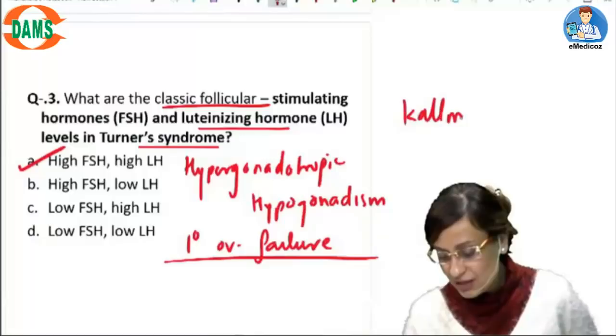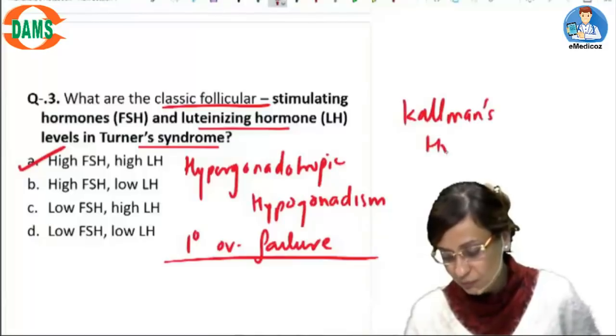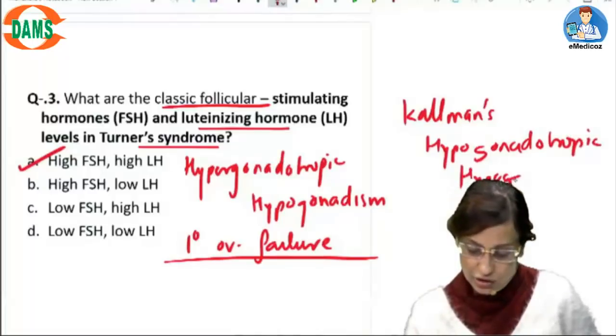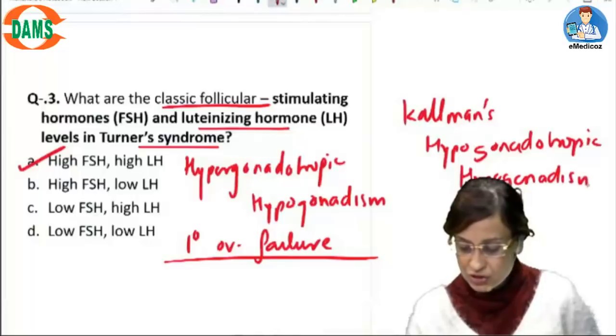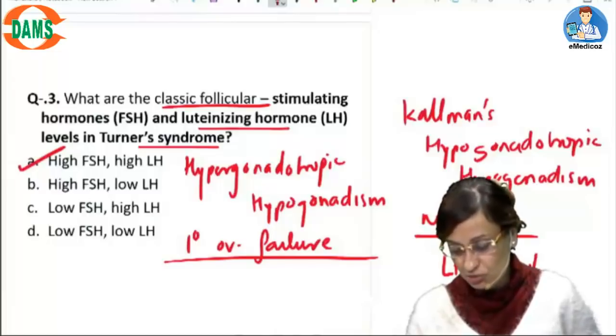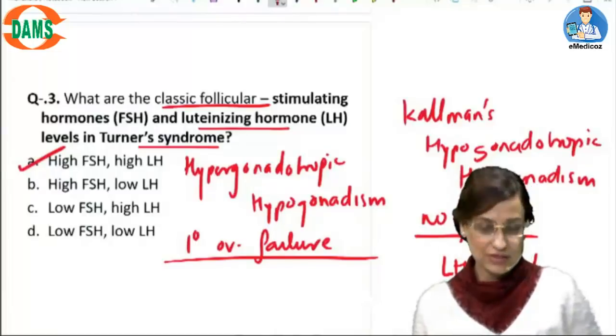Whereas in Kalman's syndrome, which is hypogonadotropic hypogonadism, the LH and FSH levels are low. Why? Because there is no GNRH release. So if there is no GNRH, the LH and FSH levels are going to be low in Kalman's.